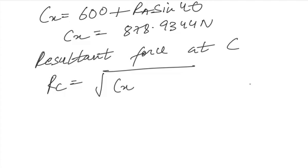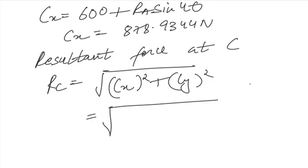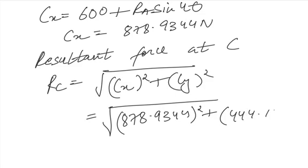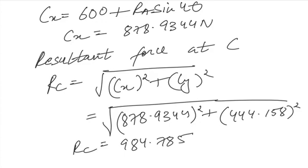This will give under root 878.9344 squared plus 444.158 squared. RC comes out to be 984.785 Newton.